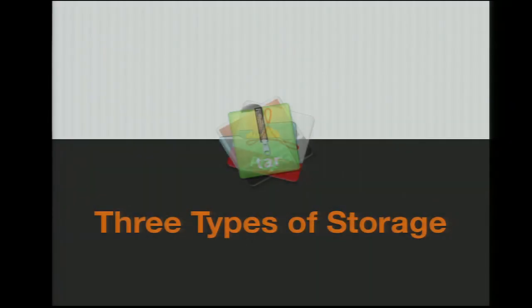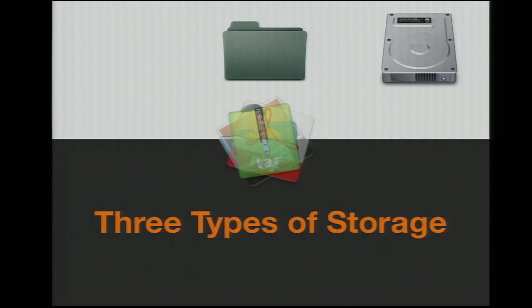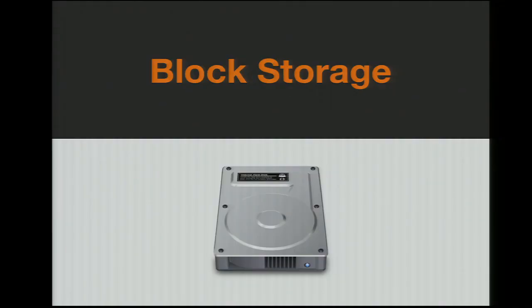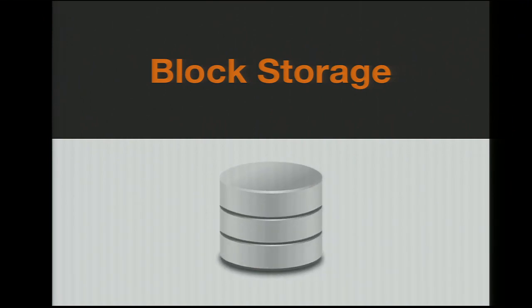There are basically three general types of storage that you can use. The first kind is block storage. The second type is file storage. And the third type is object storage. Block storage takes a raw, unformatted device and exposes that directly to the application. A common use case is databases. Block devices are very important when you need very fast access and highly customized access patterns onto your data.